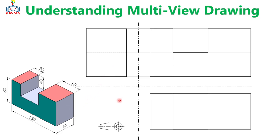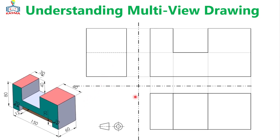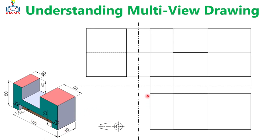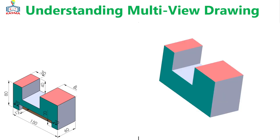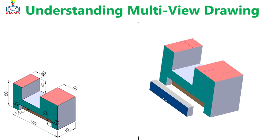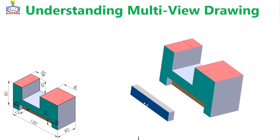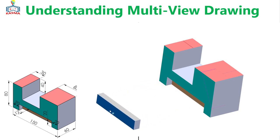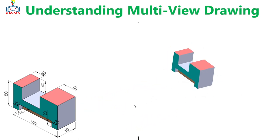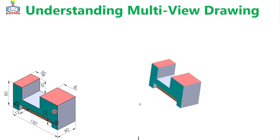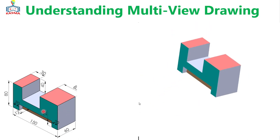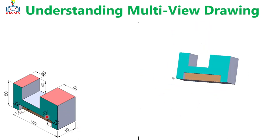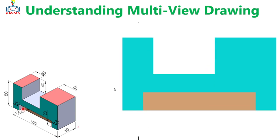Now what will happen if we just remove some portions from the lower parts of this object? Previously the multi-view drawings were this. Now we are removing this lower portion, so the new multi-view drawings will be constructed in this way. This part is just removed, and then finally we have this layout. To show that on the front view, we have to project this surface.